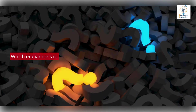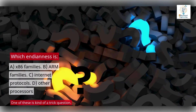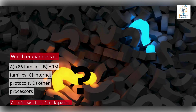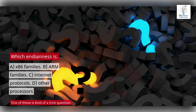Which endianness is used by: A. x86 families, B. ARM families, C. Internet protocols, D. Other processors? One of these is kind of a trick question.